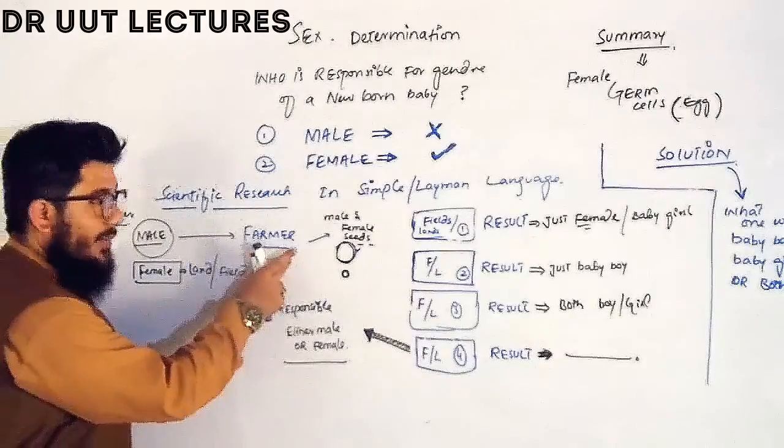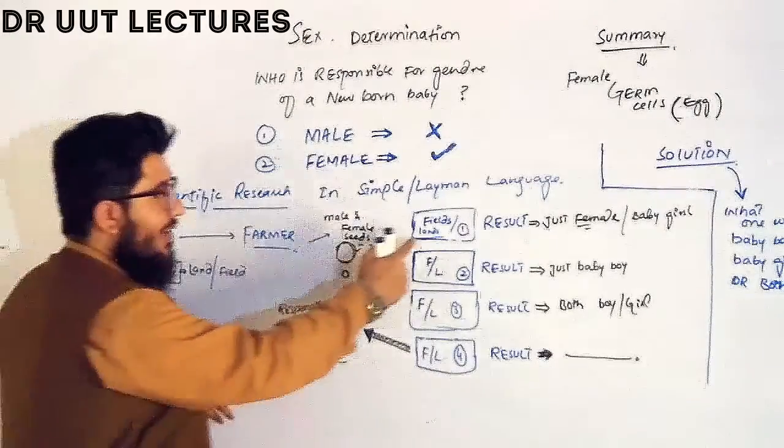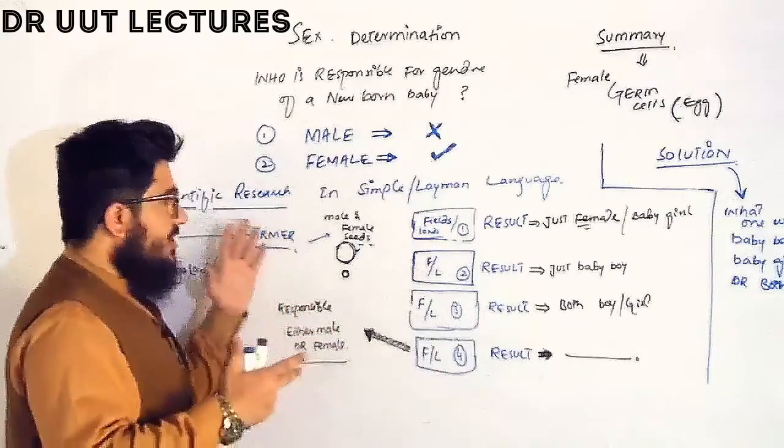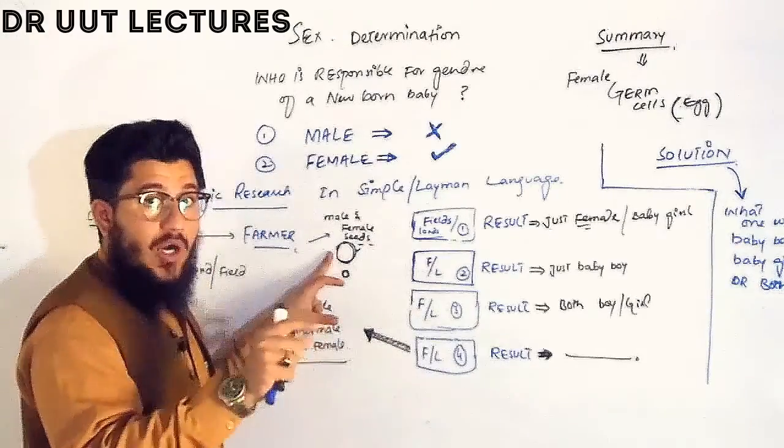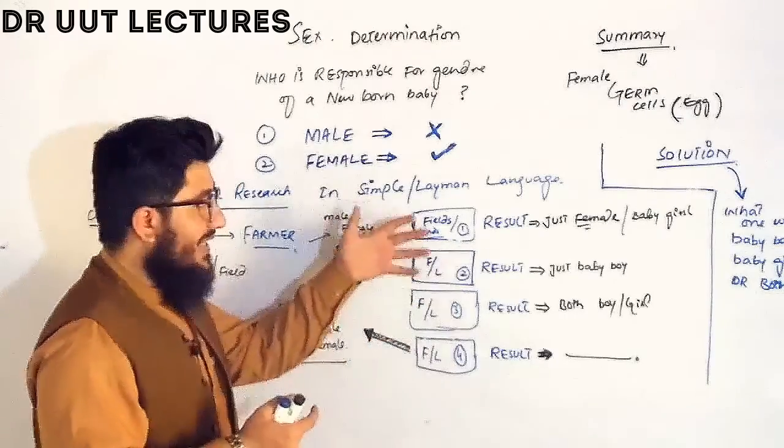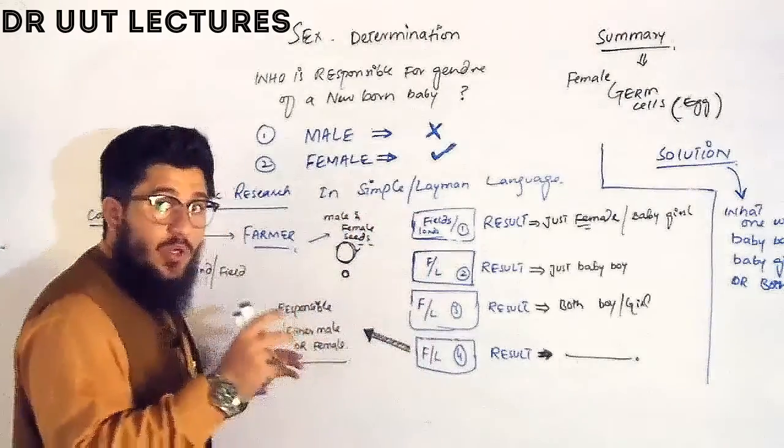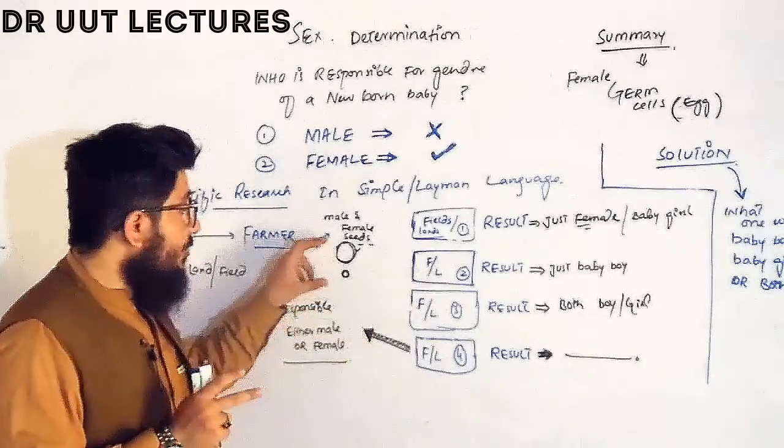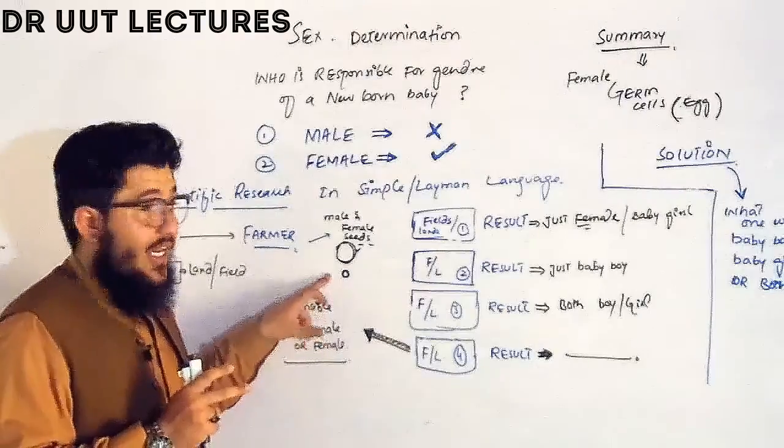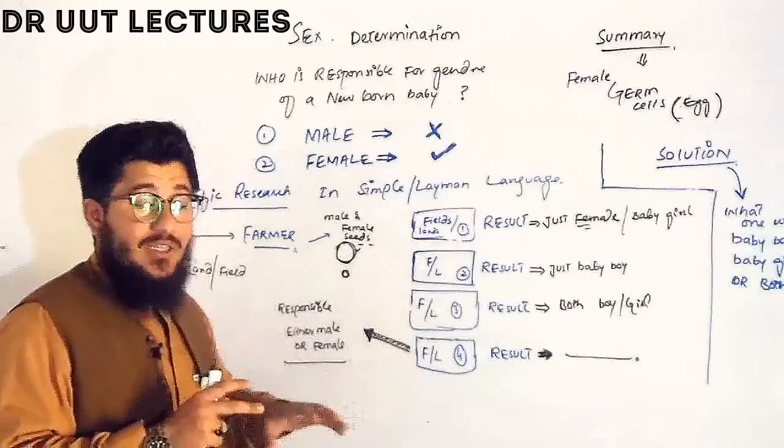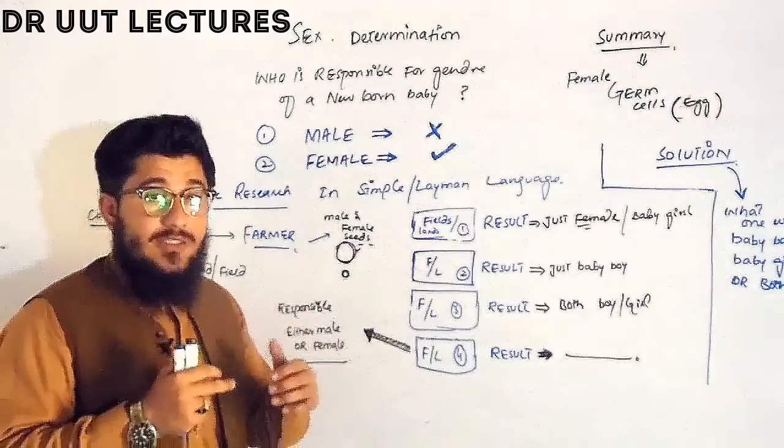So let's start the scientific research in a very simple language. Consider we have a farmer and here we have one, two, three, four lanes or fields in which this farmer is supposed to sow or plant these seeds in these fields or lanes. We all know that it is a well known fact that if you take the same kind of seeds and if you plant these seeds in different fields or lanes, they will grow in different ways.